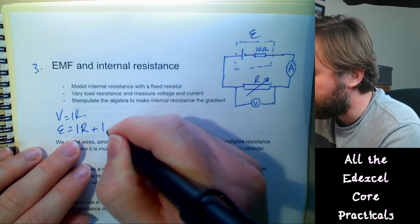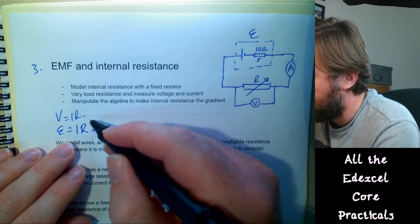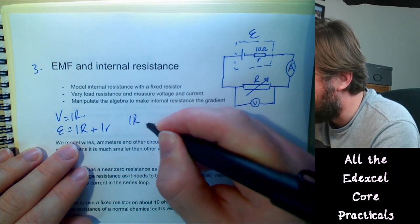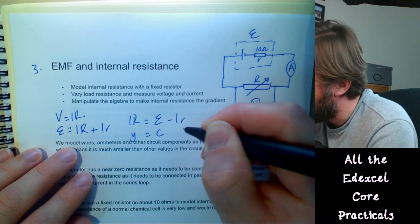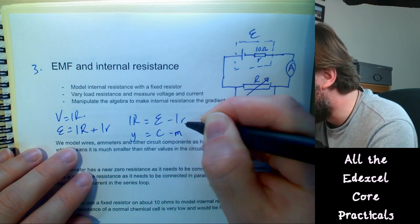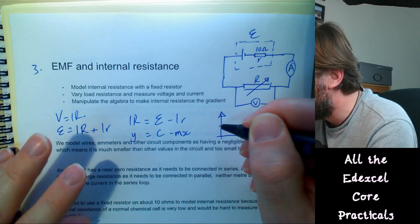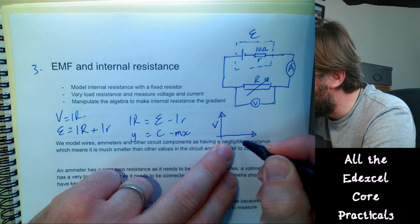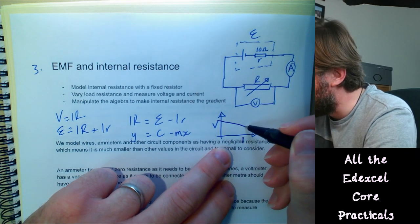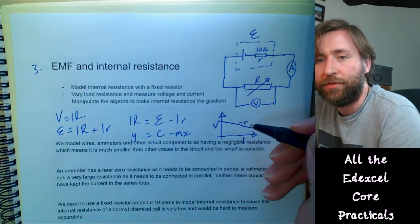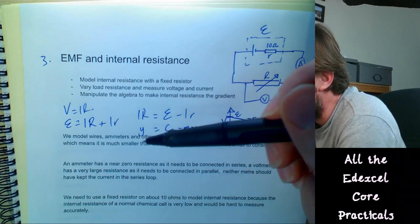Rearranging to y = mx + c form: terminal PD (V = IR) on the y-axis, current I on the x-axis, giving a gradient of −r (the internal resistance) and a y-intercept of the EMF. We use a fixed resistor to model the internal resistance because the actual internal resistance of a dry cell is very low and hard to measure accurately. The internal resistance is kept as low as possible to minimise heat dissipated in the cell.